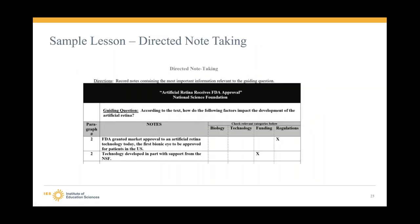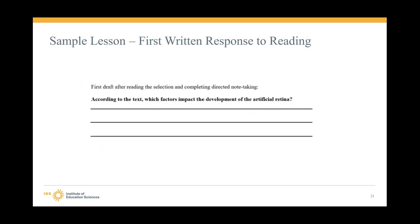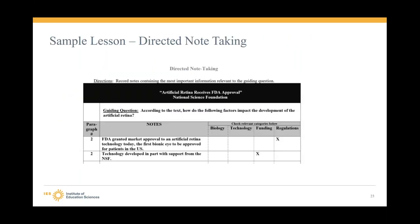Directed note-taking is next. We have a graphic organizer for that — it creates categories so students can take organized notes. After reading this article, the question is: 'According to the text, how do the following factors impact the development of the artificial retina?' We came up with four categories: biology, technology, funding, and regulations. From paragraph two we already have two notes — regulations: 'The FDA granted market approval today, the first bionic eye approved in the US'; and funding: 'The technology was developed in part with support from the NSF.' We'd have students come up with at least two or three notes for each category.